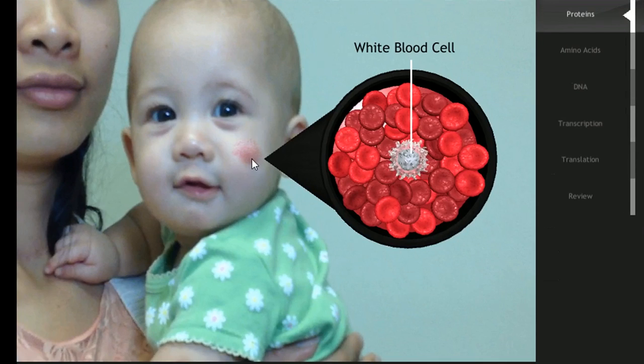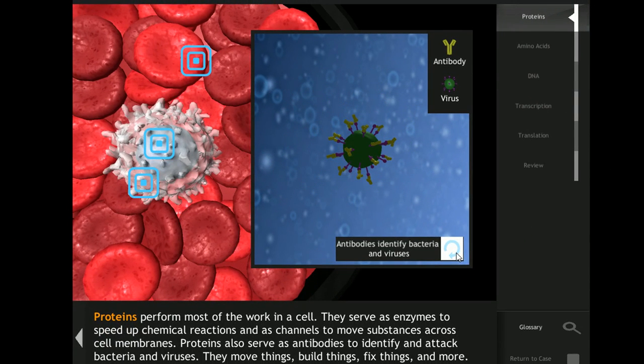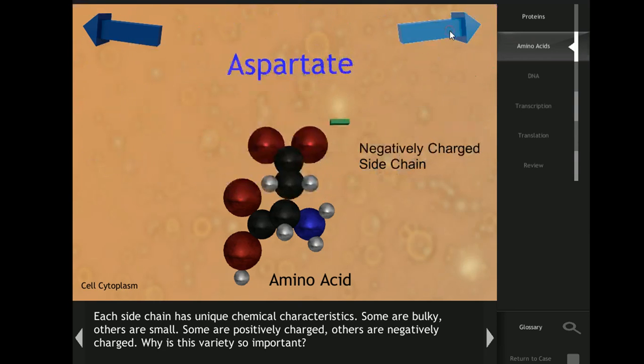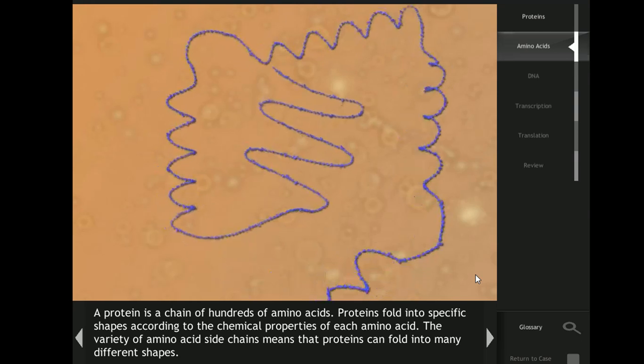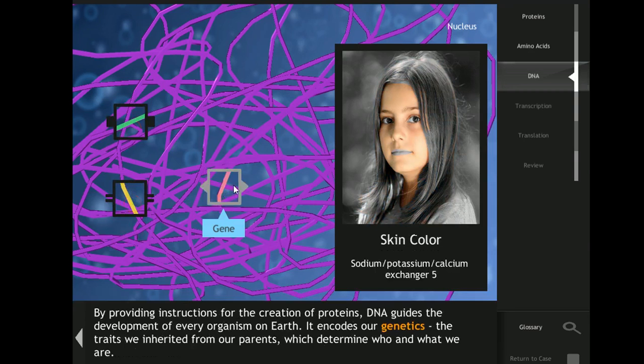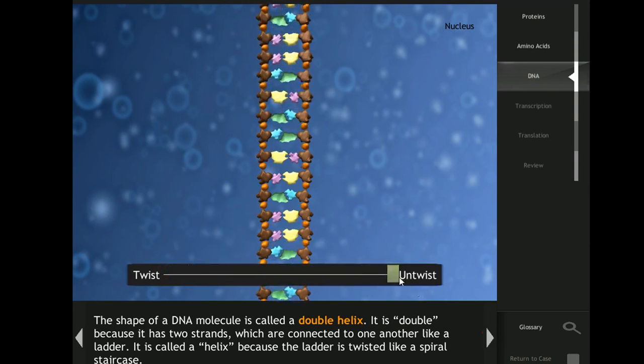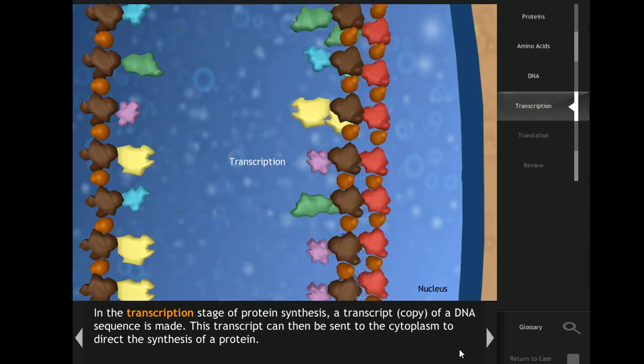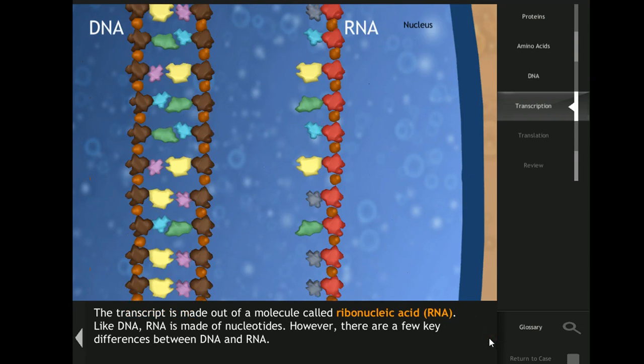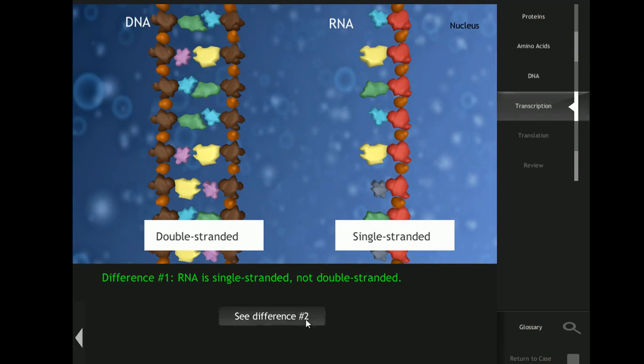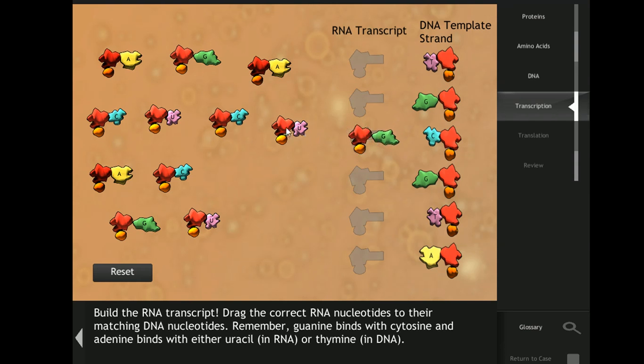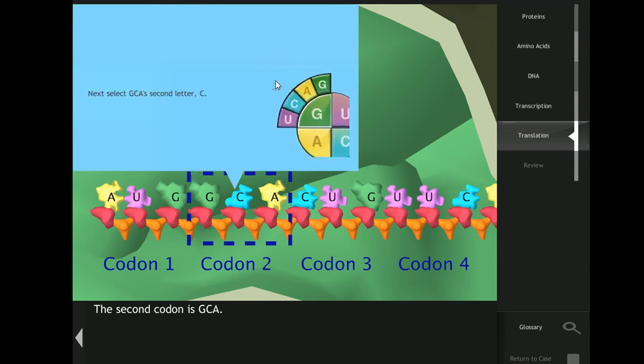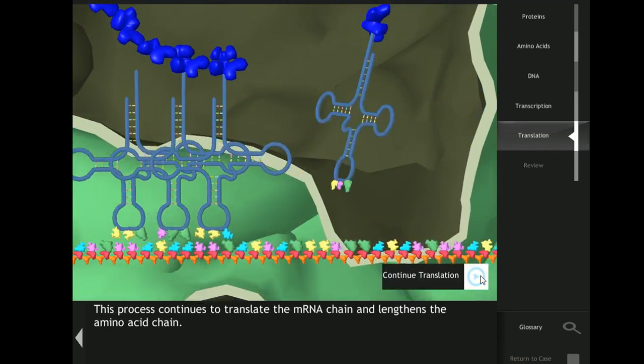Students then review the background information of protein synthesis needed to solve the case by entering an interactive manual. This includes proteins, amino acids, protein folding, genes, DNA, nitrogenous bases, transcription, RNA, nucleotides, ribosomes, codons and the codon wheel, and translation.